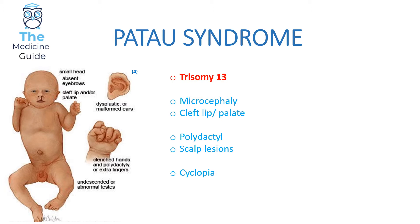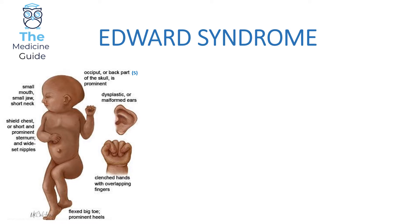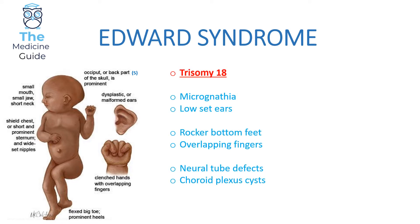Patau syndrome also presents with polydactyly — extra fingers — scalp lesions, and cyclopia. Next we have Edwards syndrome, caused by trisomy 18. A useful memory tip: when writing Edwards syndrome, replace the letter E with the number 8 to help remember it's trisomy 18, since it's easy to confuse with trisomy 21 for Down's or trisomy 13 for Patau.